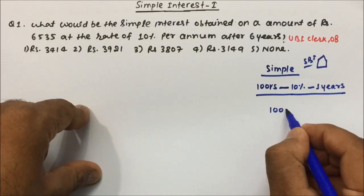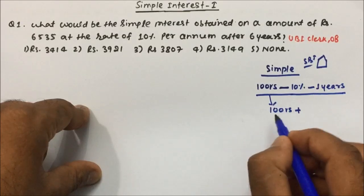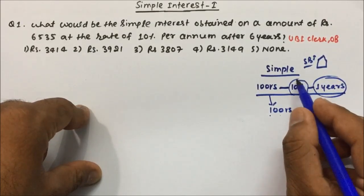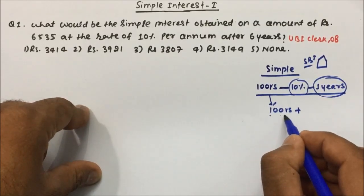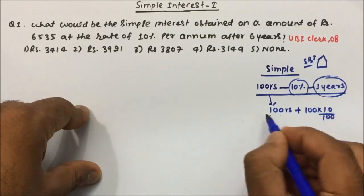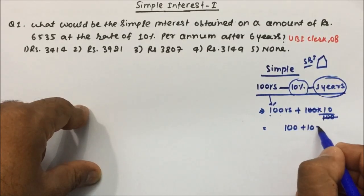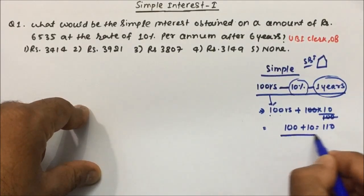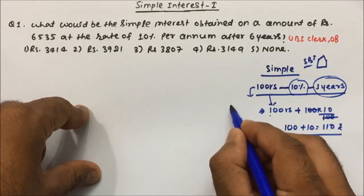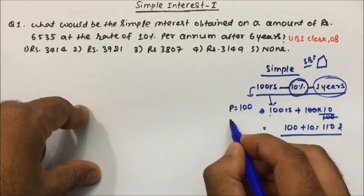After one year, the bank will give you your 100 rupees back plus the interest, because the bank is keeping your money for one year and has to pay 10% rate of interest. So after one year, bank will give you 100 rupees plus 10% of 100 rupees, which means 100 plus 10 = 110 rupees.